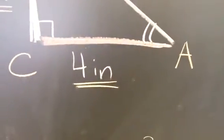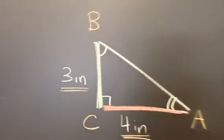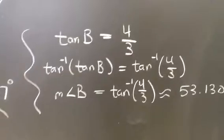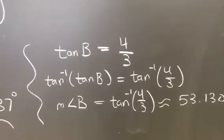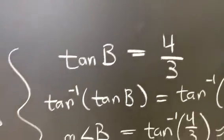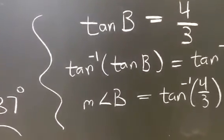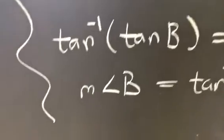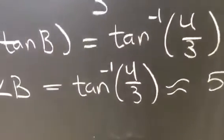And so notice that opposite angle B is the 4 inches, and adjacent to angle B is the 3 inches. And so I am perfectly justified in establishing the following equation. Tangent of angle B is equal to 4 thirds. Now I have to apply the appropriate inverse to both sides, which is tan inverse. Tan inverse of tan B simply becomes the measure of angle B.